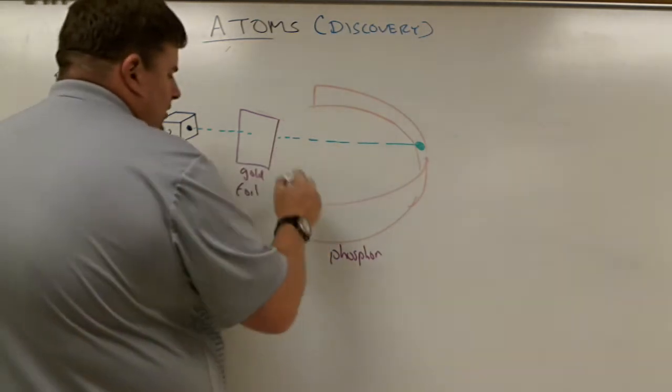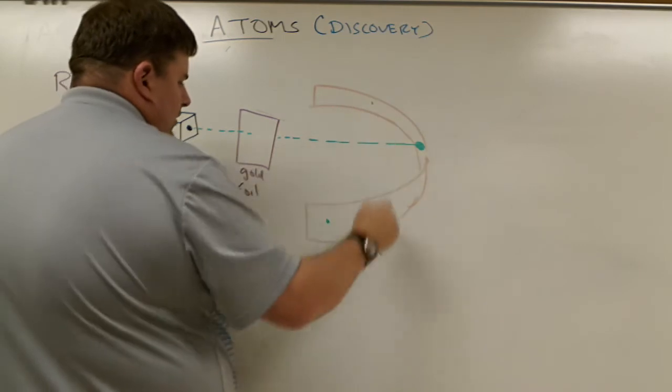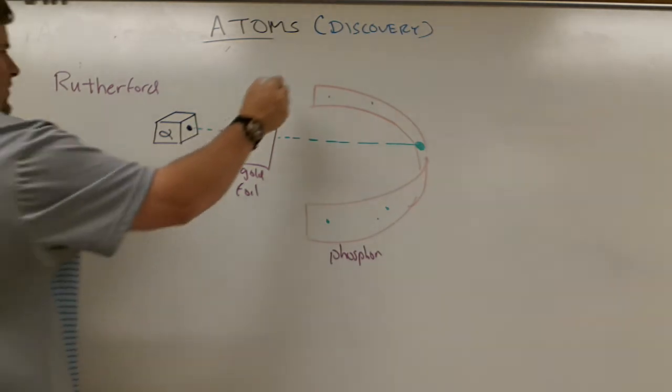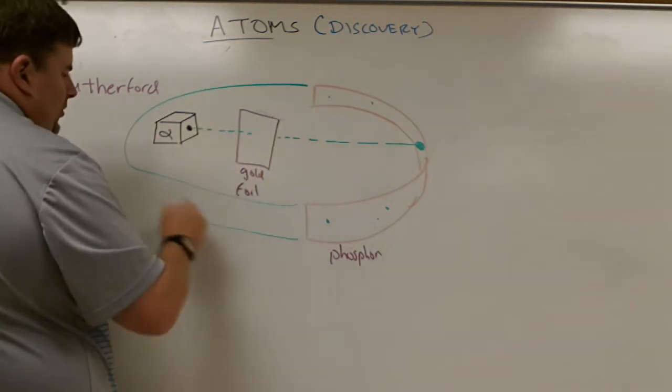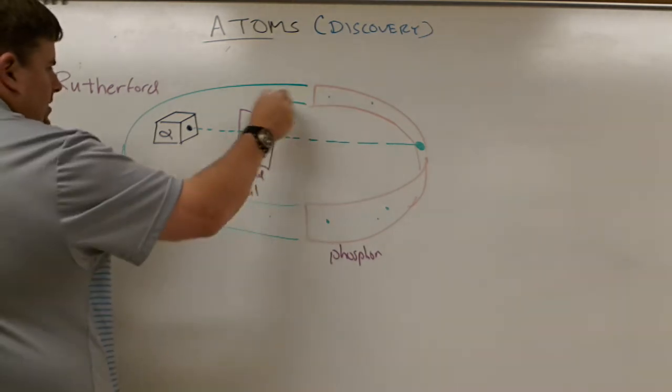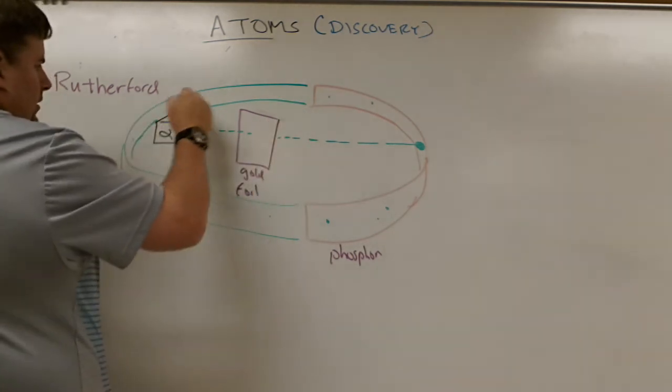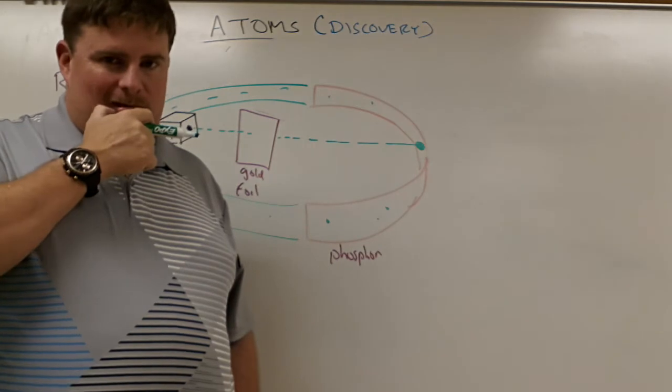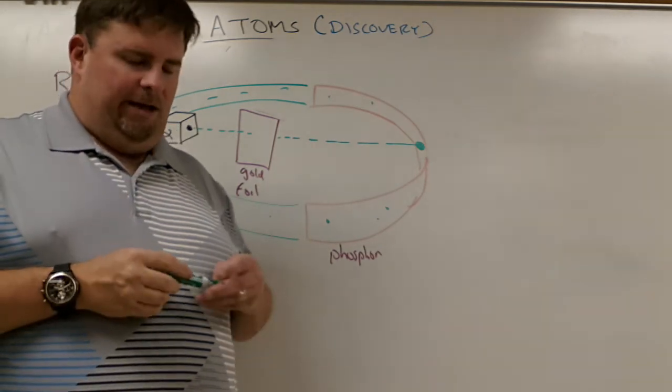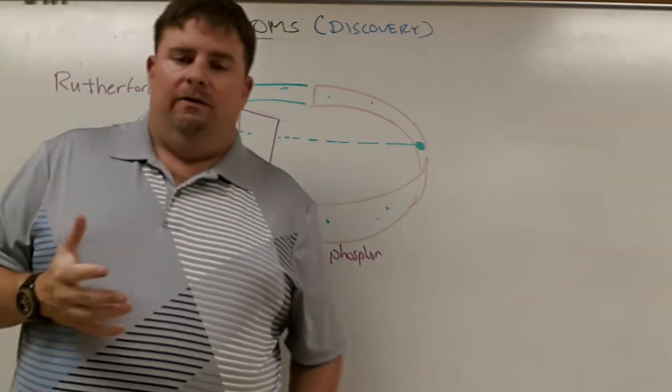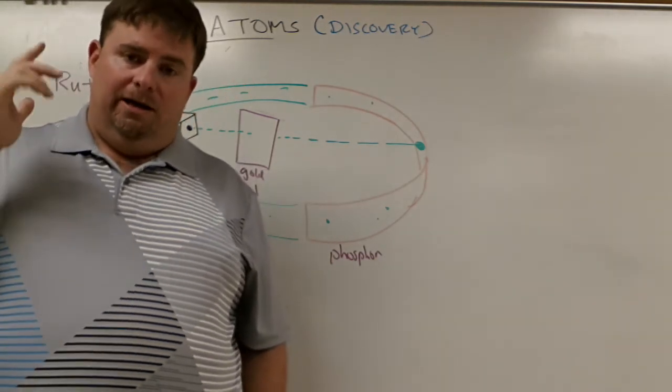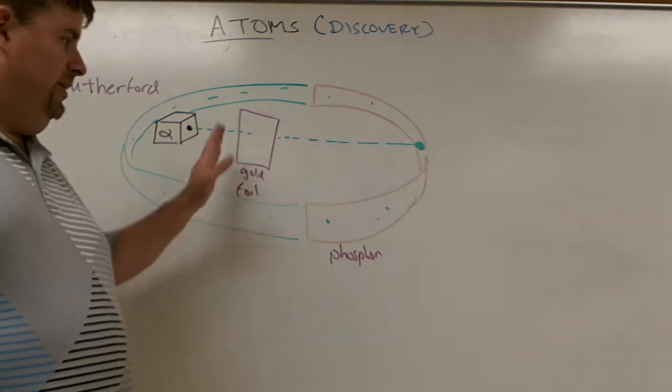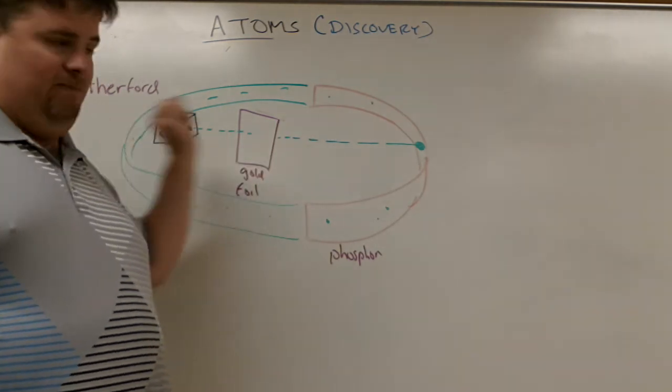What they noticed is that over here on the phosphor paper, they started noticing that there were other hits. And as they repeated the experiment, they took this phosphor paper and wrapped it around the entire thing, and they noticed that there were hits all around behind the box. This doesn't make any sense, because the alpha particle is a pretty sizable particle. And he likened this thing to saying, well, if I have a 15 caliber bullet and I shoot it at some toilet paper, and the bullet hits the toilet paper and then bounces straight back. As this gold foil is pretty thin, these alpha particles are moving pretty fast, everything should just pass right through.